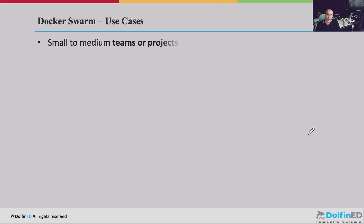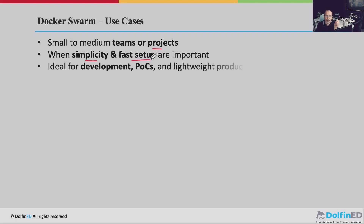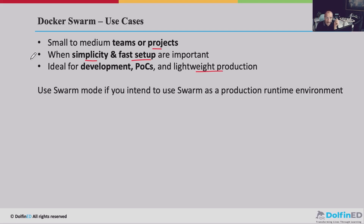Use cases for Docker Swarm: it's best for small to medium teams or projects. You can still use it in production for small requirements because the learning curve is much easier than something like Kubernetes. When simplicity and fast setup are important, swarm is a good choice — also for development, proof of concept, and lightweight production. If you have a large-scale production environment, swarm is not the right choice. In general, use swarm mode if you intend to use it as a production runtime environment but at small scale.